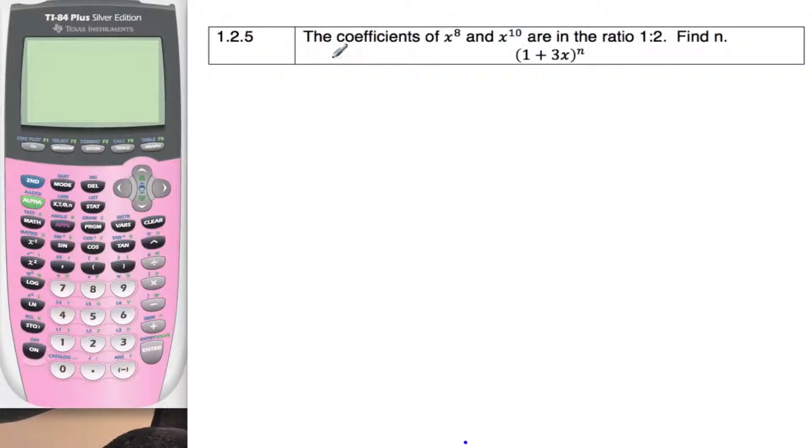Hey, here's another binomial expansion problem, 1.2.5. The coefficient of x to the 8 and x to the 10th are in a ratio of 1 to 2, which means if I multiply the coefficient of x to the 8th by 2, that will equal the coefficient of x to the 10th.